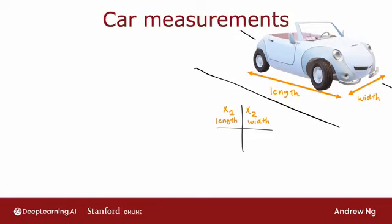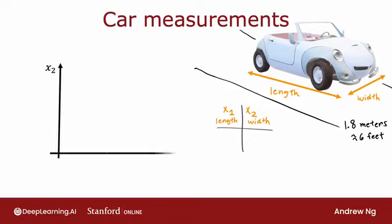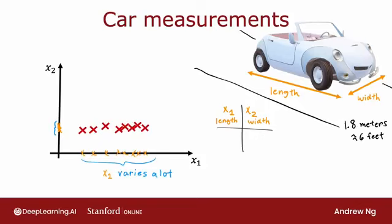in the United States, most cars are, let's call it about 1.8 meters wide. That's just under six feet. So if you were to have a collection of cars and the data set of the length and widths of the cars, you would find that the data set might look like this, where x1 varies quite a bit, because some cars are really long,